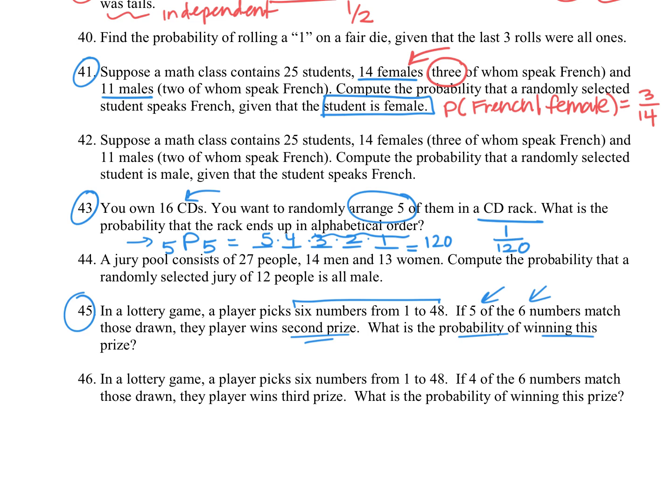So we want to think about, okay, first off, our sample space is choosing from those 48 six numbers. And the order doesn't matter here, so it's a combination. And then we want to think about, we want five of those six numbers.